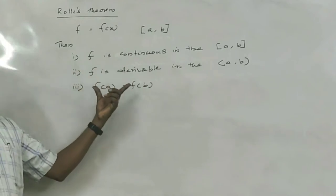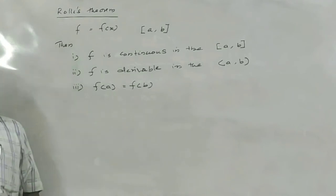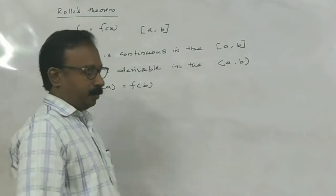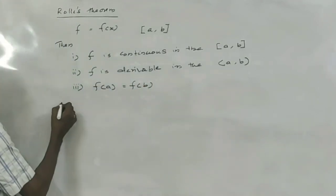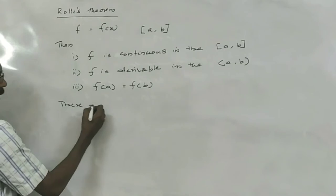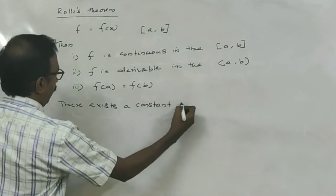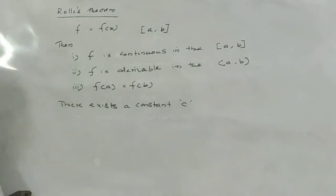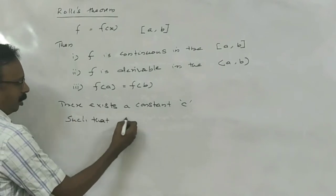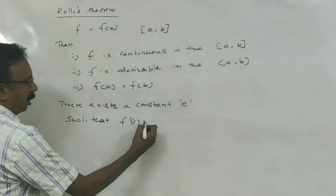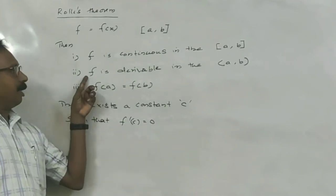The third condition is F of A is equal to F of B. If these three conditions are satisfied, then we say the function satisfies Rolle's theorem. Then there exists a constant C such that F dash C is equal to zero. Here F dash X is the derivative, and substituting X equal to C we get F dash C.